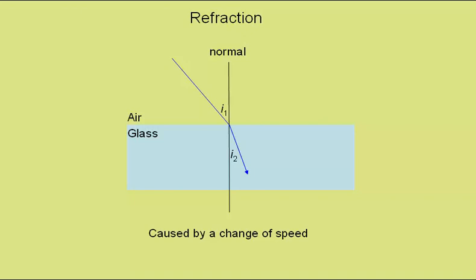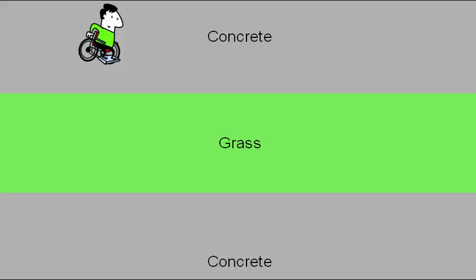It's easier to understand how this effect comes about if we consider the much simpler case of a wheelchair travelling on concrete approaching a patch of grass at an angle.